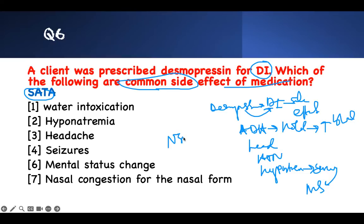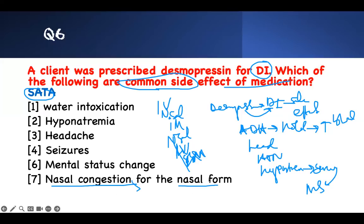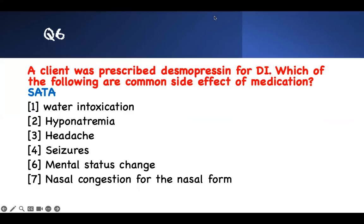Desmopressin also comes in a nasal form. You can take it nasally, IV, or IM. If they use the nasal form, they usually get nasal irritation and congestion. Side effects include water intoxication, hyponatremia, seizures, mental status changes, and nasal irritation. All of these are correct. If you choose all of them, you get seven points. If you only know five, you get five out of seven — that's fine. Choose those you're confident about.